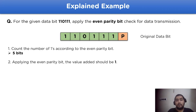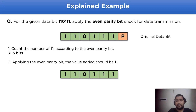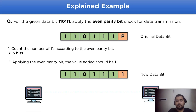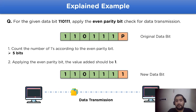To balance this according to even parity bit, we have to add one in place of P, so the new data to be transmitted becomes 1101111, which will be transmitted to the receiver side by the sender side.